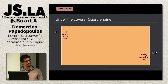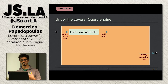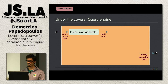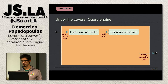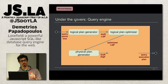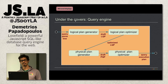The query engine takes a query parse tree and outputs an execution plan. The logical plan generator creates an unoptimized logical query plan — a tree of relational algebra operations. The logical plan optimizer applies rule-based optimization using heuristic rules to make the tree faster to calculate. Then it's converted to a physical query plan where all algorithms and access methods are specified. Finally, cost-based optimization takes into account all indices and the current state of the database to produce the final execution plan.